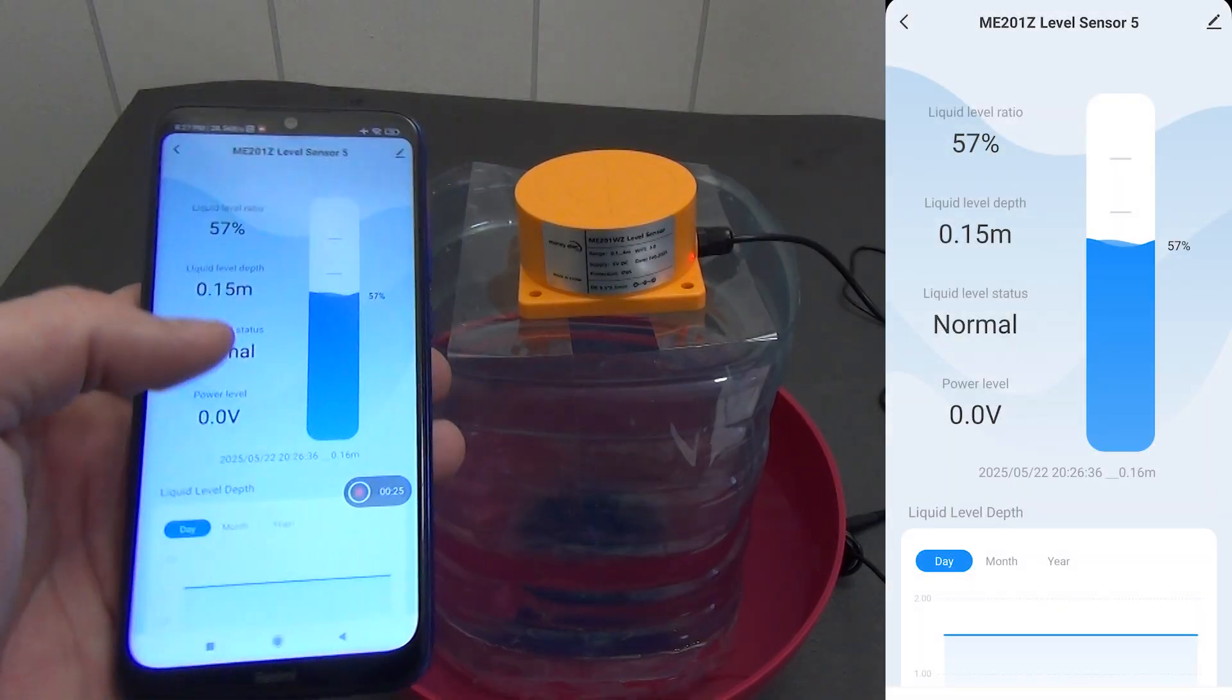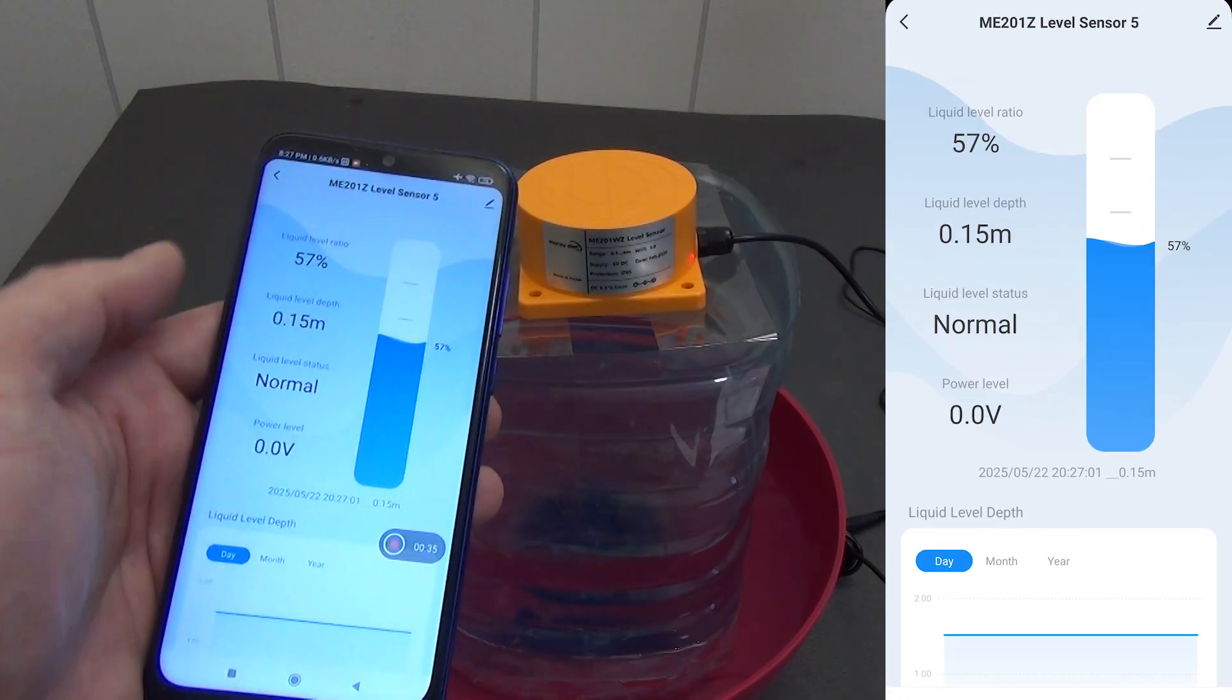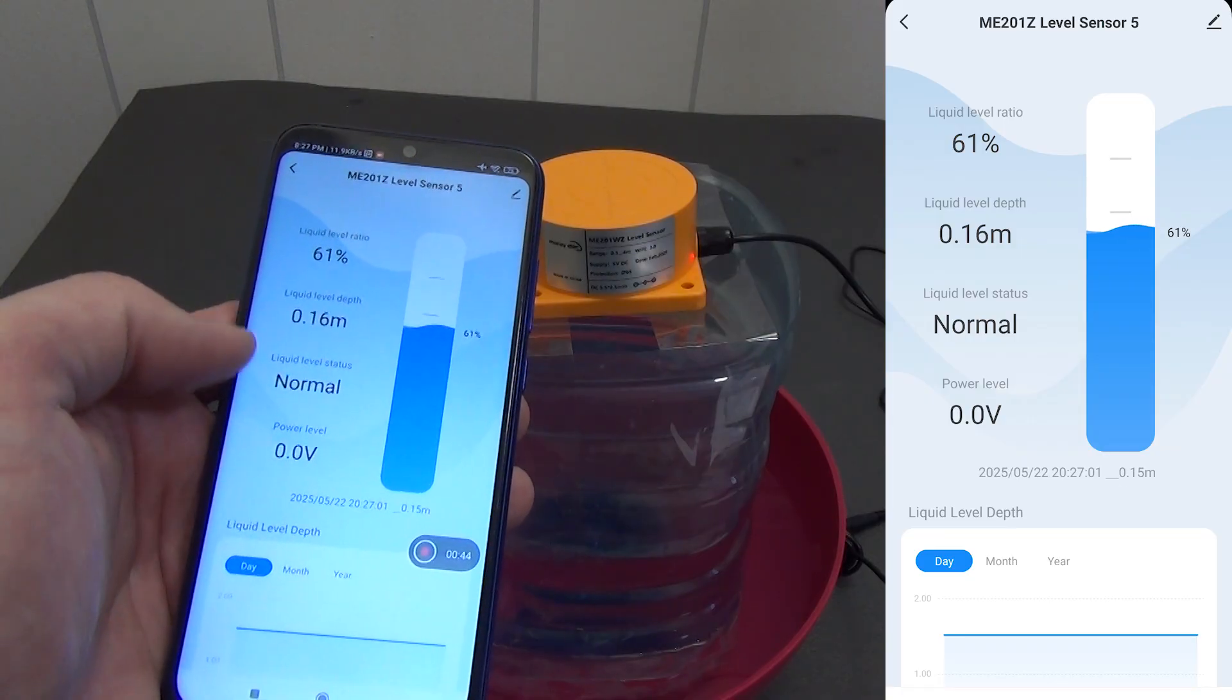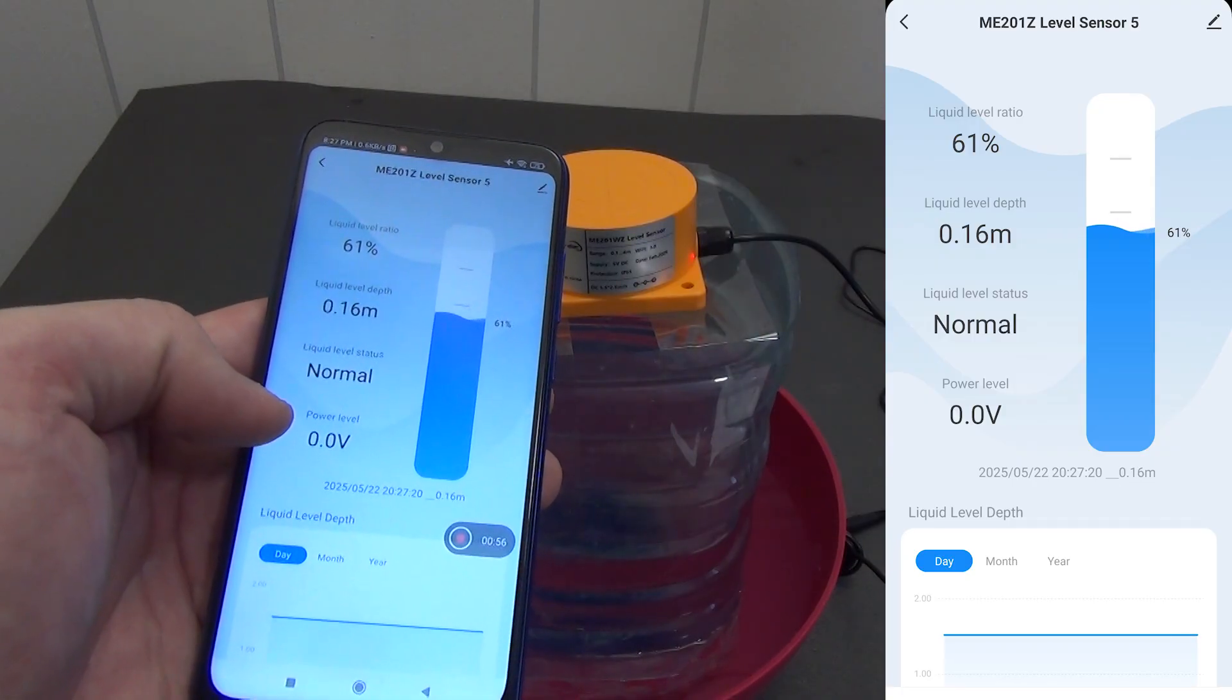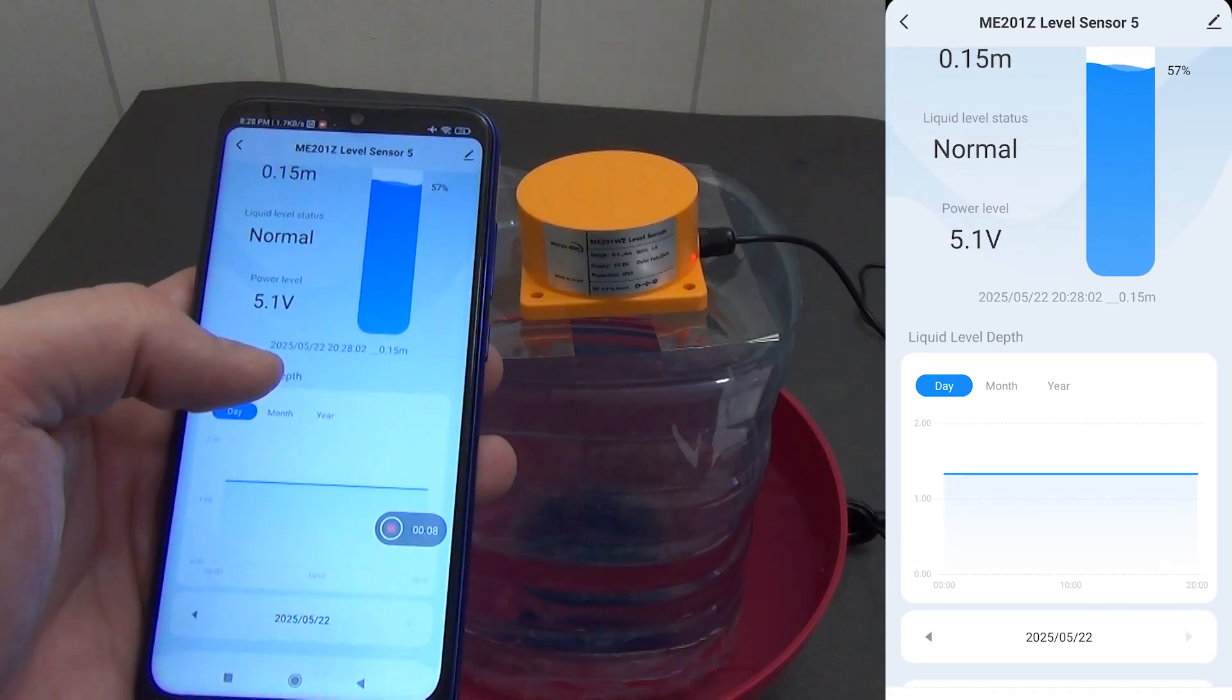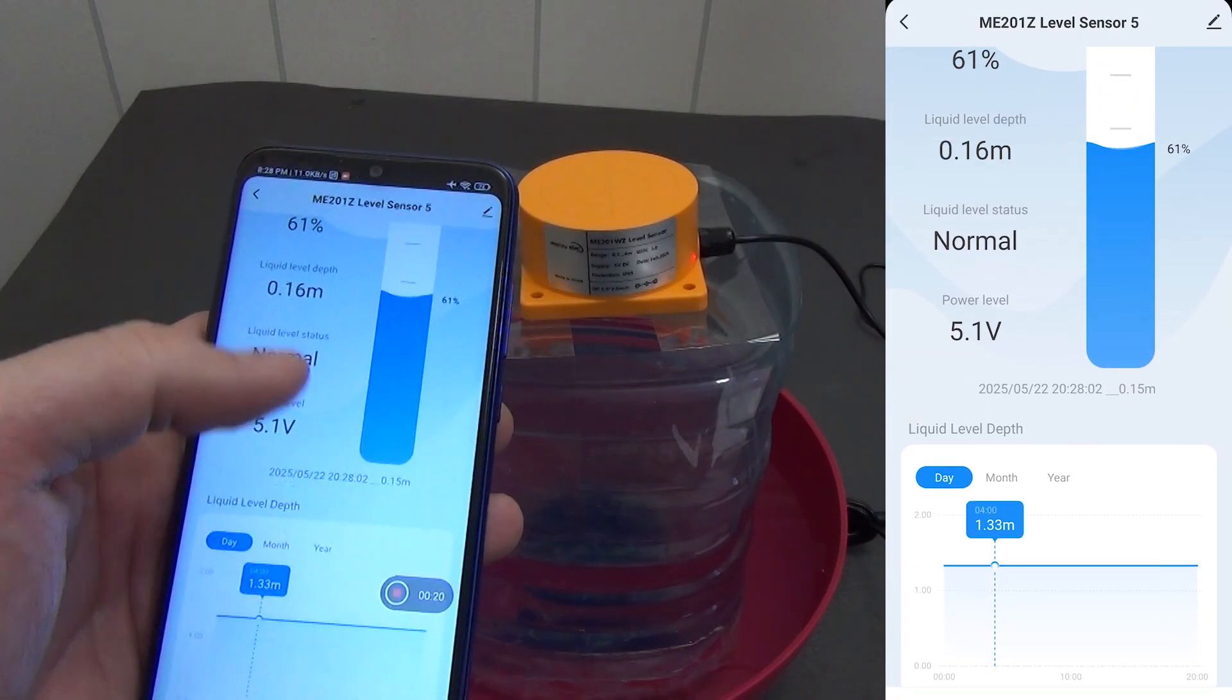Let's go inside the sensor plug-in. At the top, we see a virtual column of tank filling. Now the filling level is 57%. And on the left side, we are shown the following information: Liquid level ratio filling level is 57%, liquid level depth depth is 0.16 meters, liquid level status normal, if anything there will be an overflow signal here. If there is little liquid, there will be an alarm about a small amount of liquid in the tank. Power level 5.1 volt, the voltage is fine, it is nice that the device monitors this. The time of recording the values is displayed at the bottom. Conclusion: the level is average, the sensor did not work, everything is stable. Perhaps the tank was just filled.